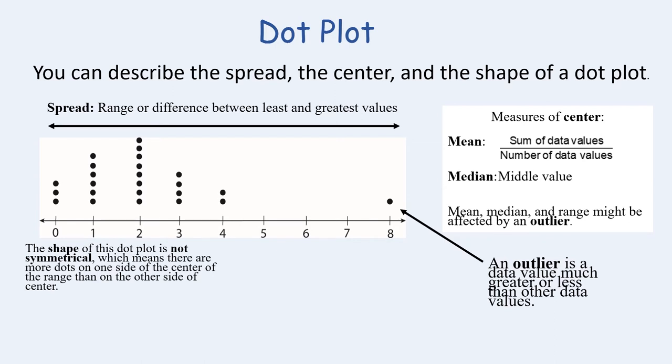We can also identify and describe the shape of a dot plot. The shape of this dot plot is not symmetrical, which means there are more dots on one side of the center than on the other side. Symmetrical means that a line can be drawn directly through the center to divide the figure into two parts that are mirror images of each other.